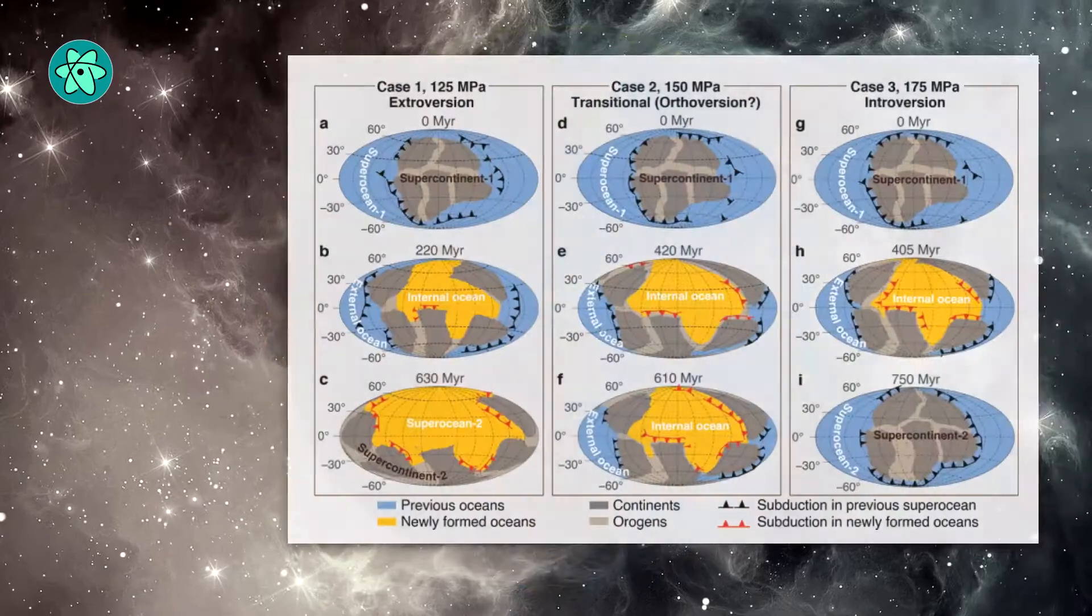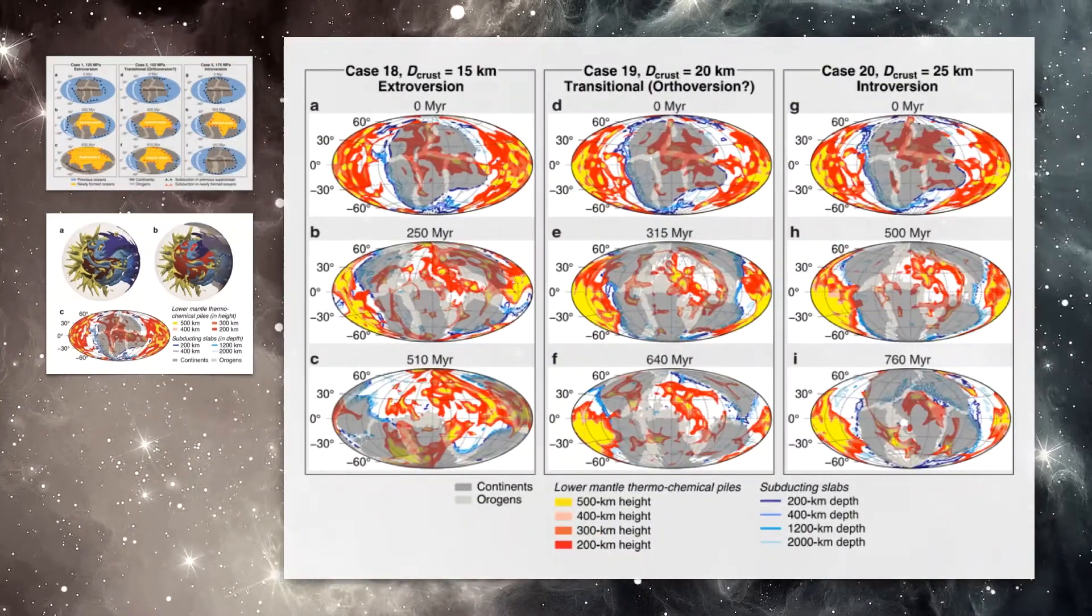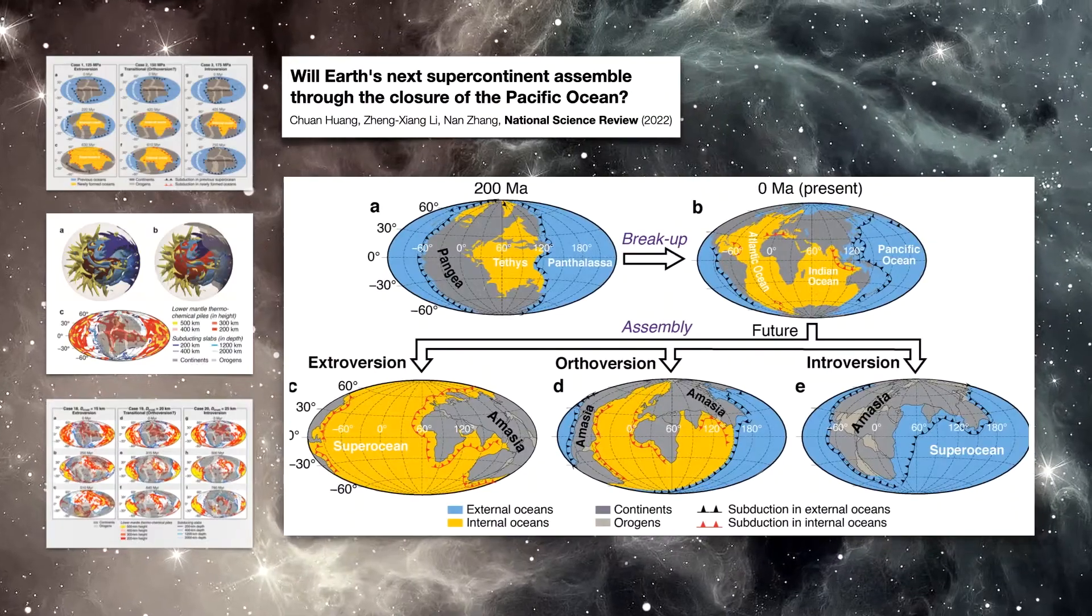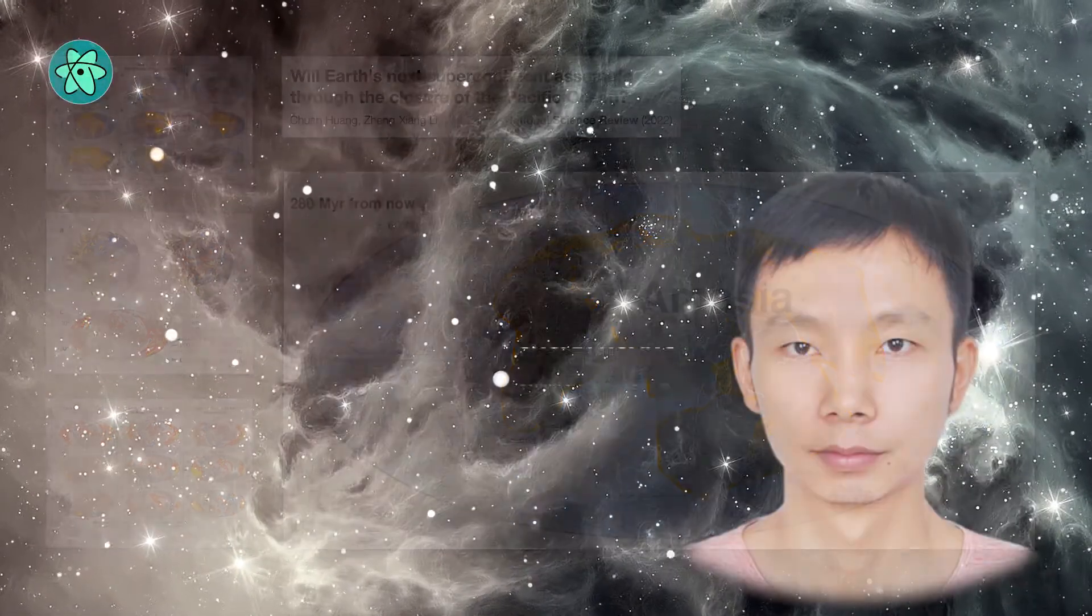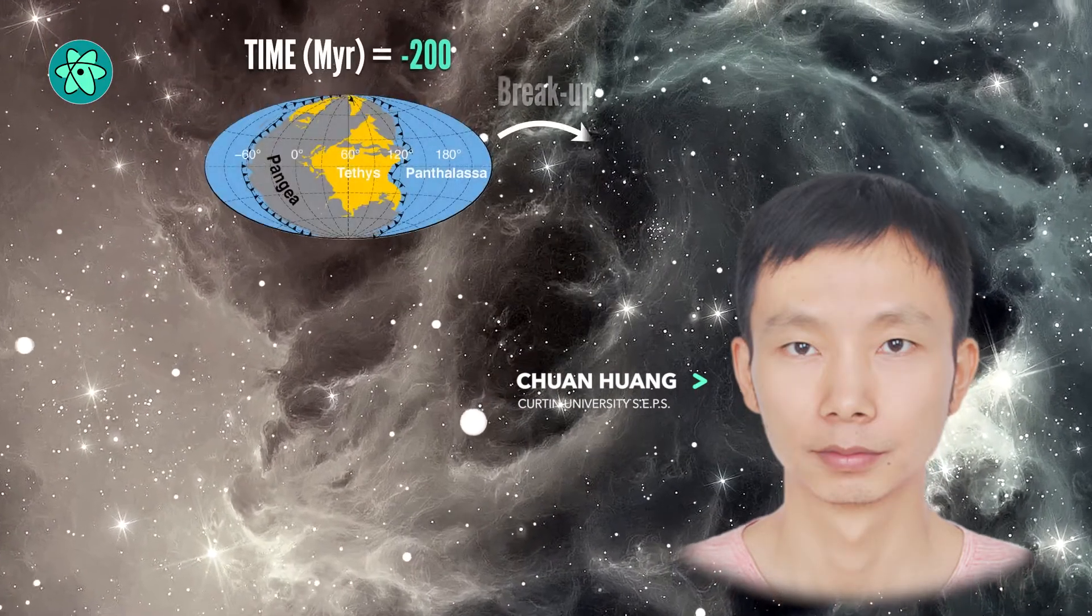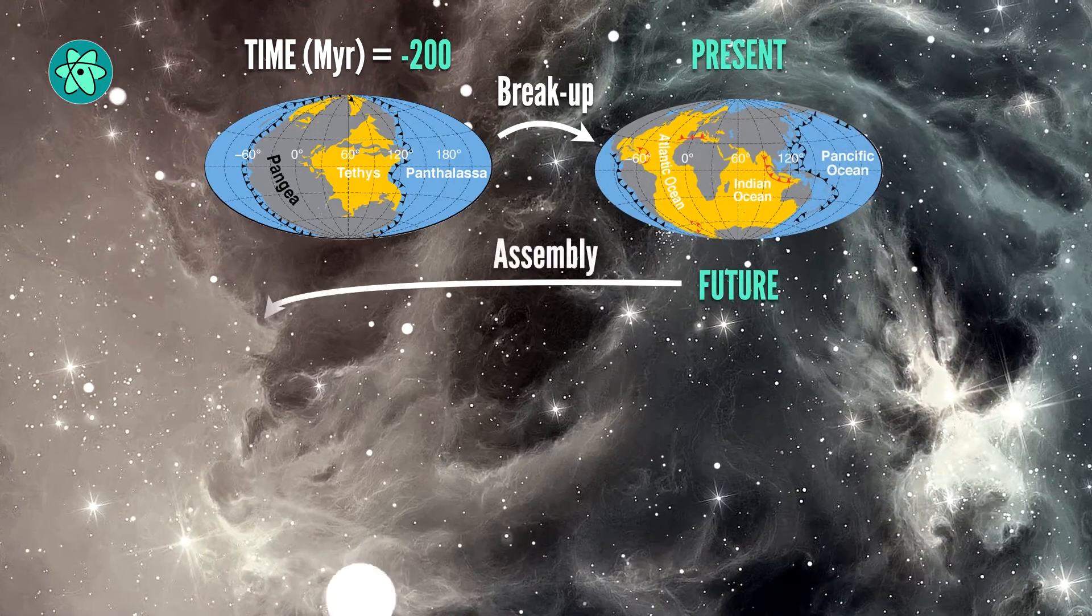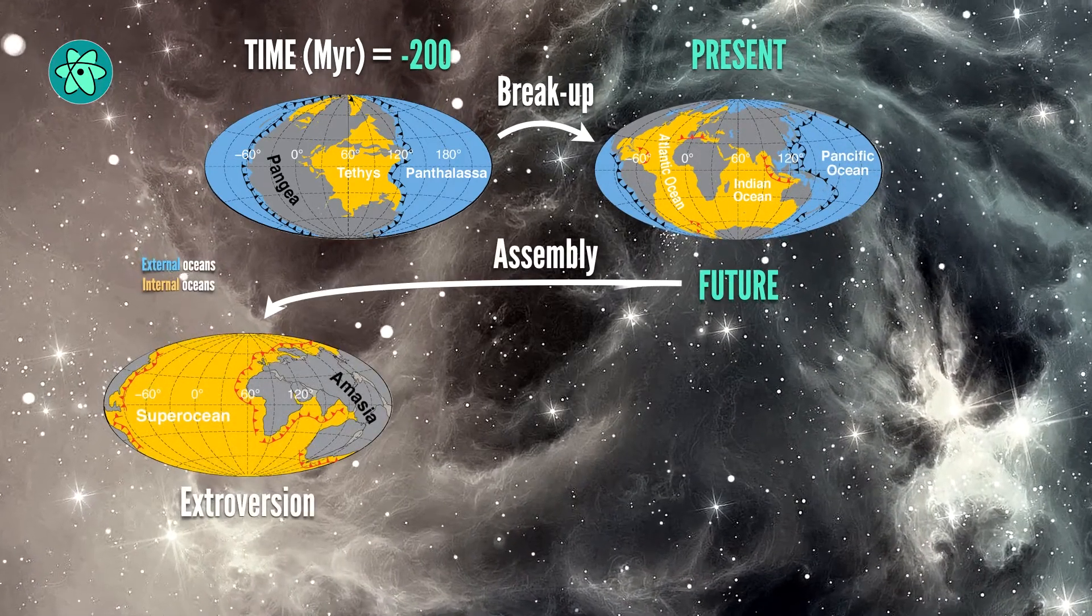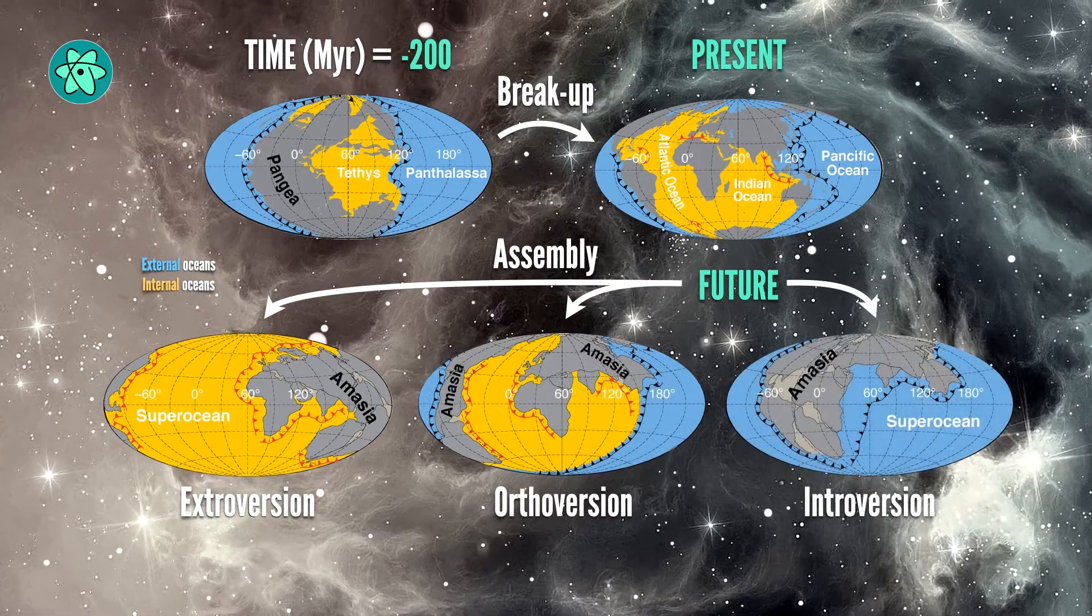The study was co-authored by researchers from Curtin School of Earth and Planetary Sciences and Peking University in China, and published in National Science Review. Lead author Chuan Huang from Curtin's Earth Dynamics Research Group and the School of Earth and Planetary Sciences said the new findings were significant and provided insights into what would happen to Earth in the next 200 million years.